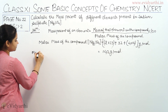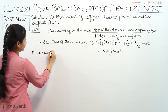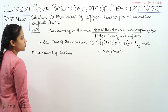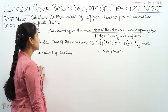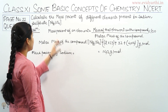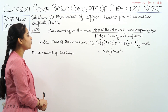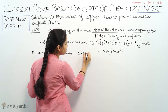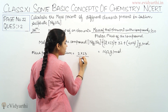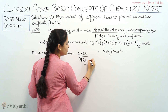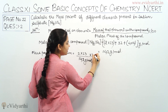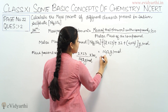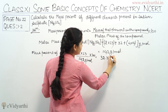Mass percent of sodium: the mass of sodium in the compound — we have two atoms of sodium and sodium's atomic mass is 23. So the mass of the element in the compound is 2×23, divided by the molar mass of the compound, 142 grams per mole, multiplied by 100. Calculating this, we get 32.39%.